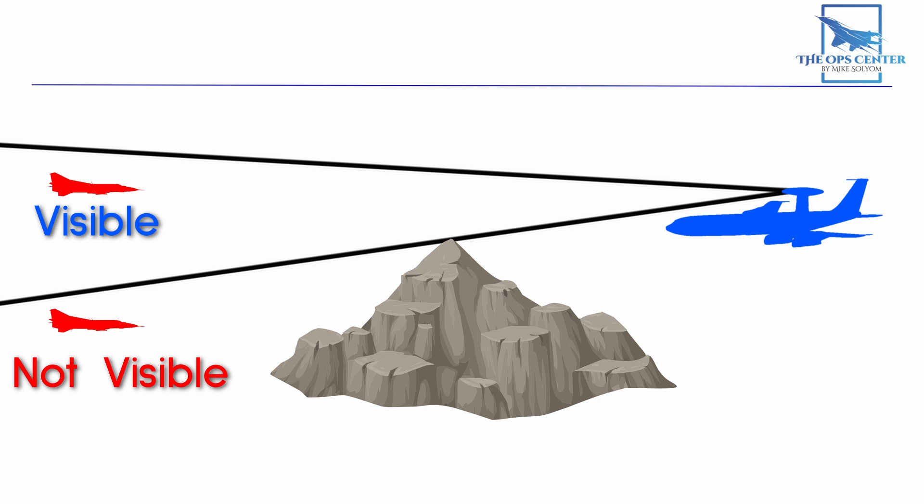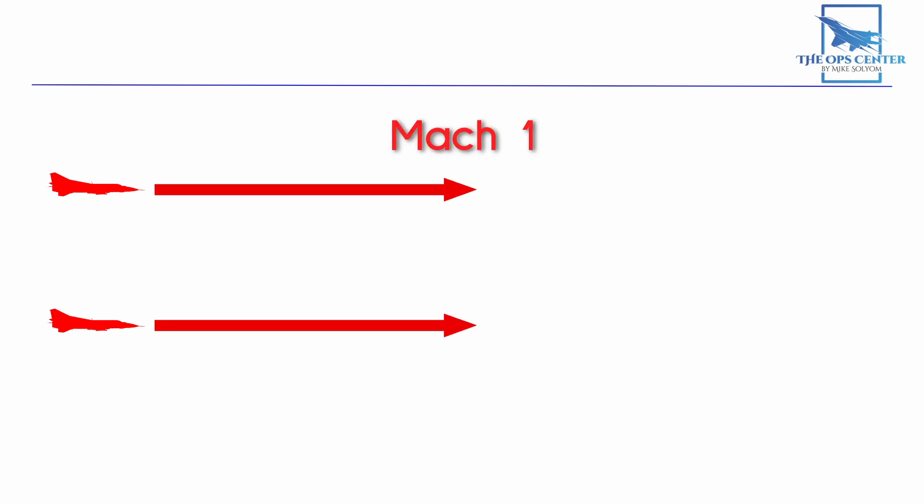With the defenders outnumbered and low flyers hidden from long-range radar, it's not a stretch to say this is a difficult scenario. Every minute counts — those fencers can fly at Mach 1 at sea level, which is about 11 nautical miles per minute. That doesn't leave much time for the defenders to get things right. Every minute wasted brings the attackers 11 miles closer to victory, so communication and coordination need to be as close to perfect as possible. That's the real lesson to be learned here.